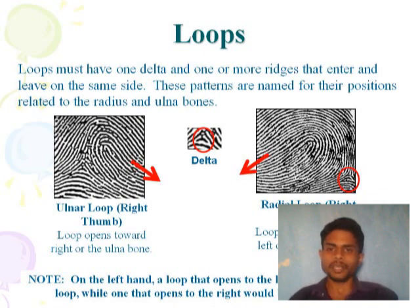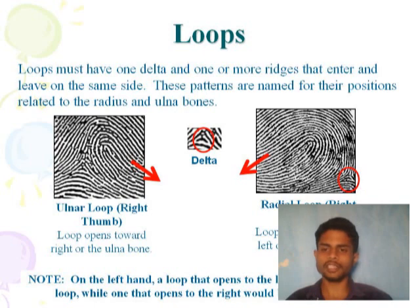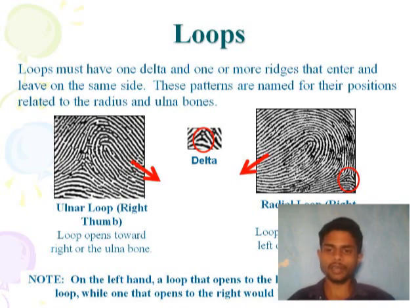Loop patterns are named for their position related to the radius and ulna bones. In the radial loop type, the loop enters and exits on the thumb side. In the ulnar loop, the loop enters and exits on the opposite side toward the ulna.